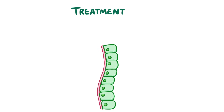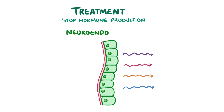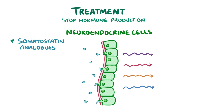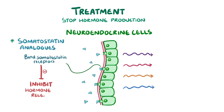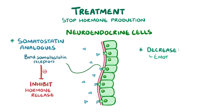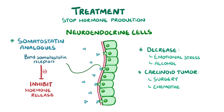When it comes to treatment of carcinoid syndrome, the main aim is to stop hormone production from the neuroendocrine cells. This can be done with a somatostatin analogue, because these then bind to the somatostatin receptors and inhibit the release of hormones. It's also useful to try and decrease emotional stress and alcohol consumption, because this can help limit hormone release.